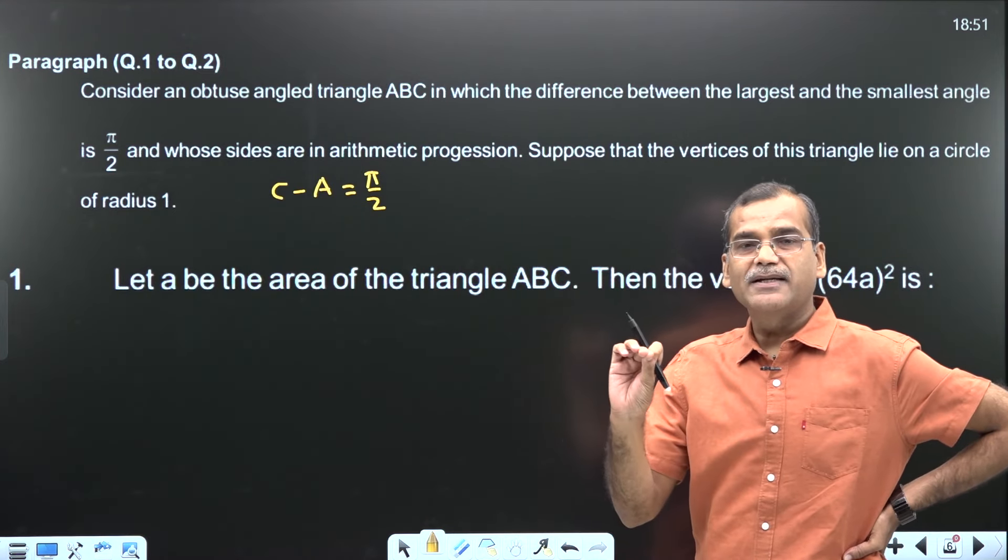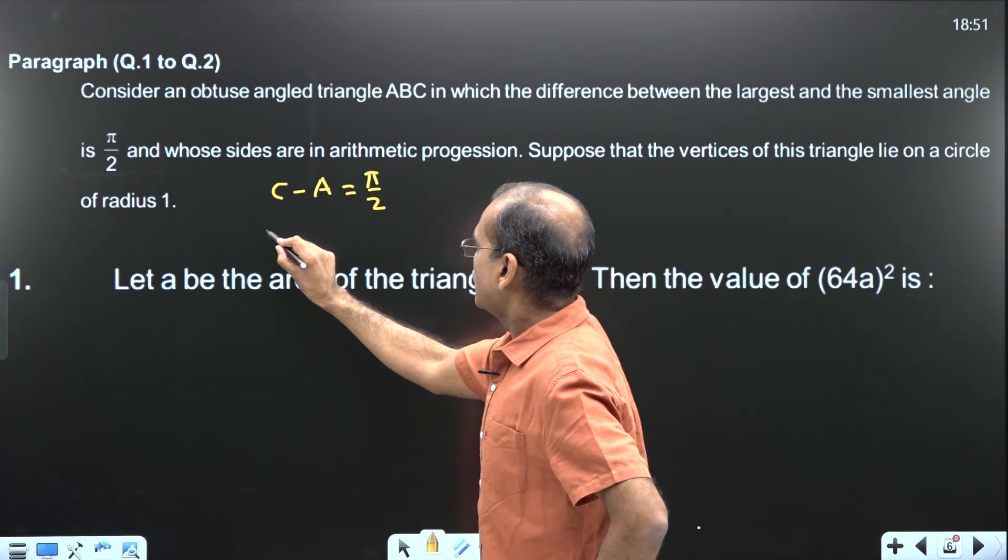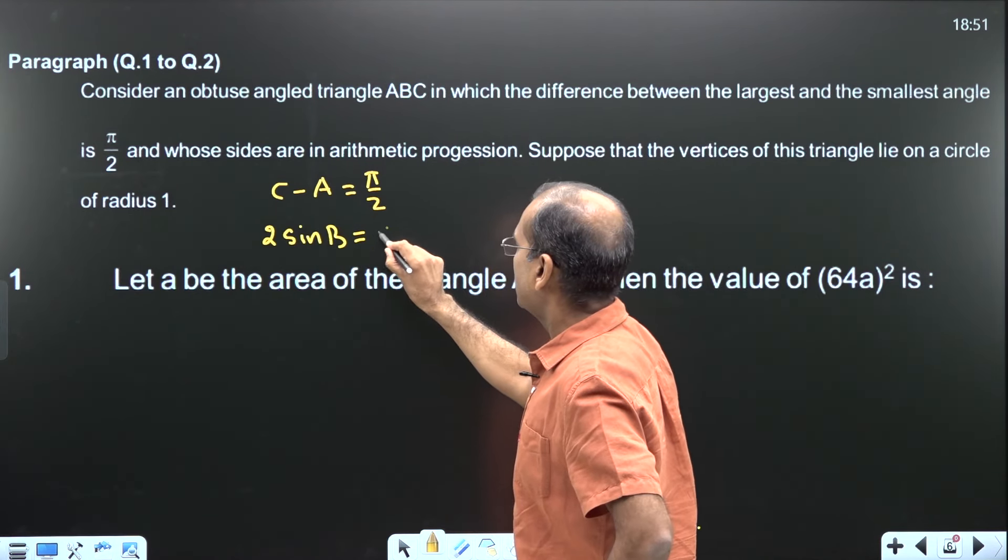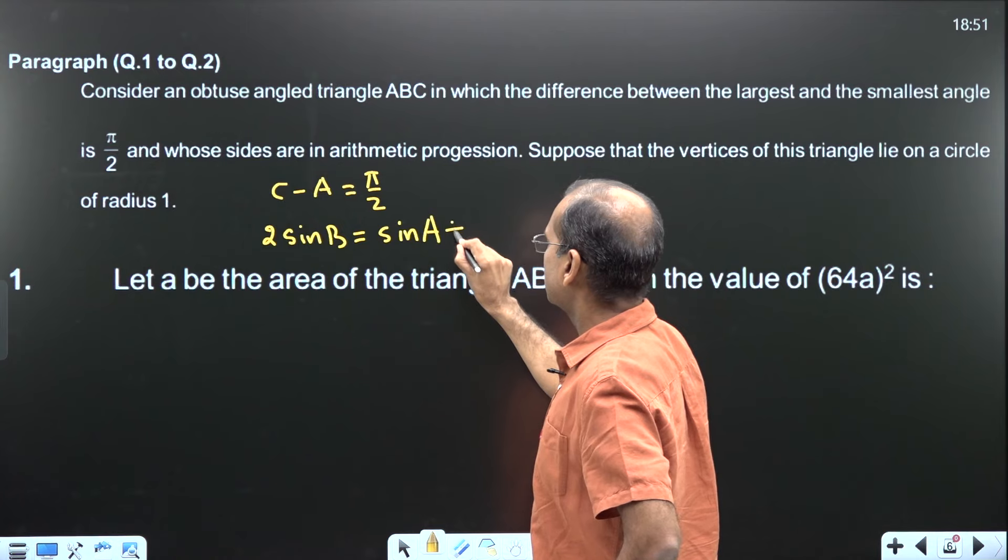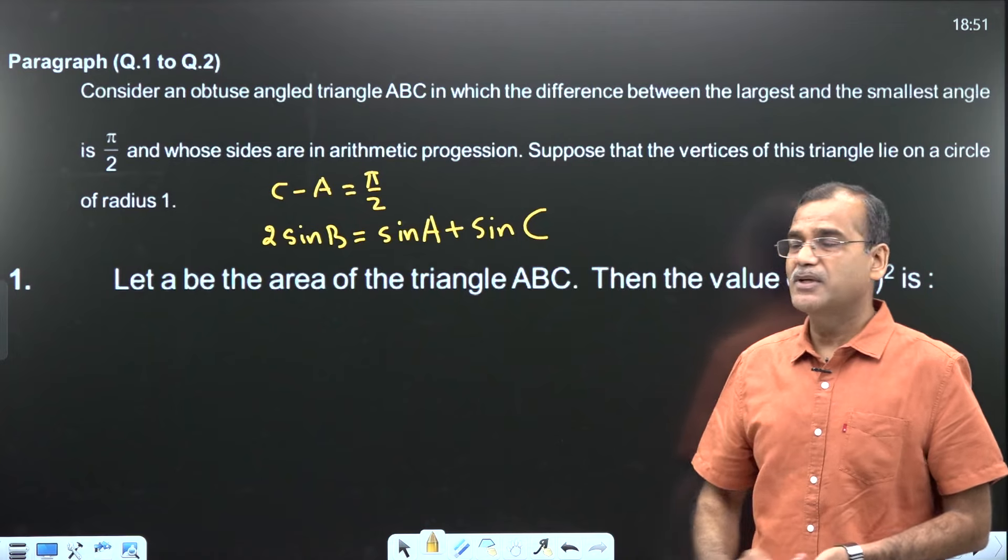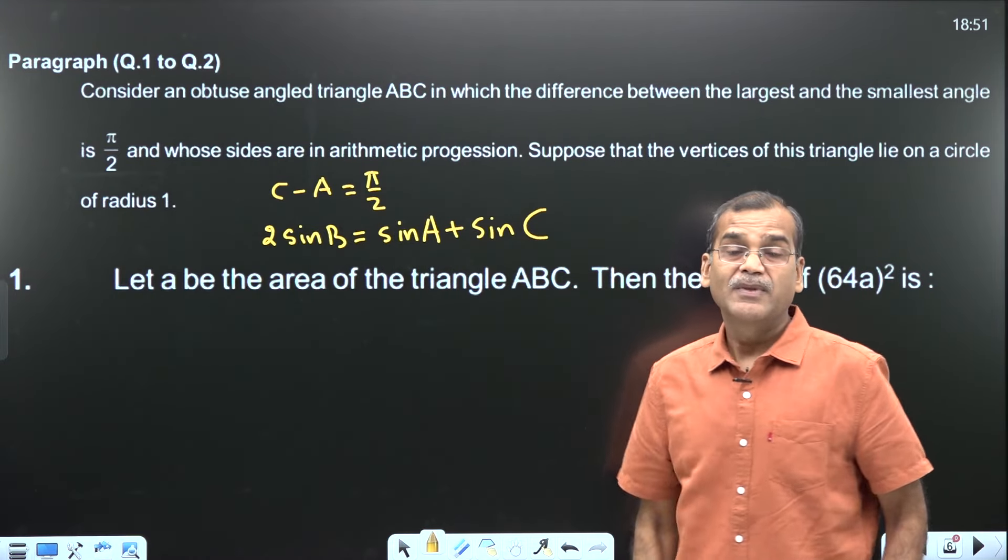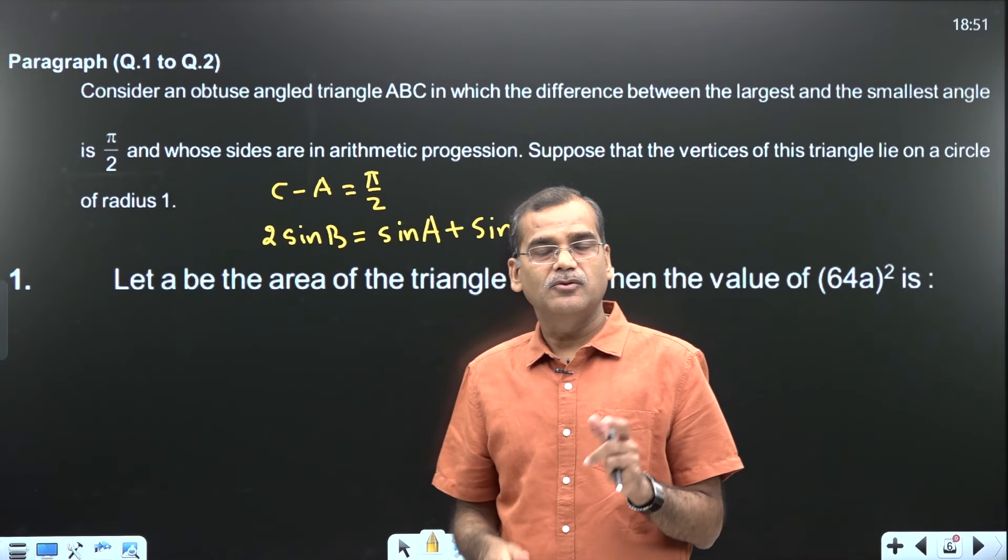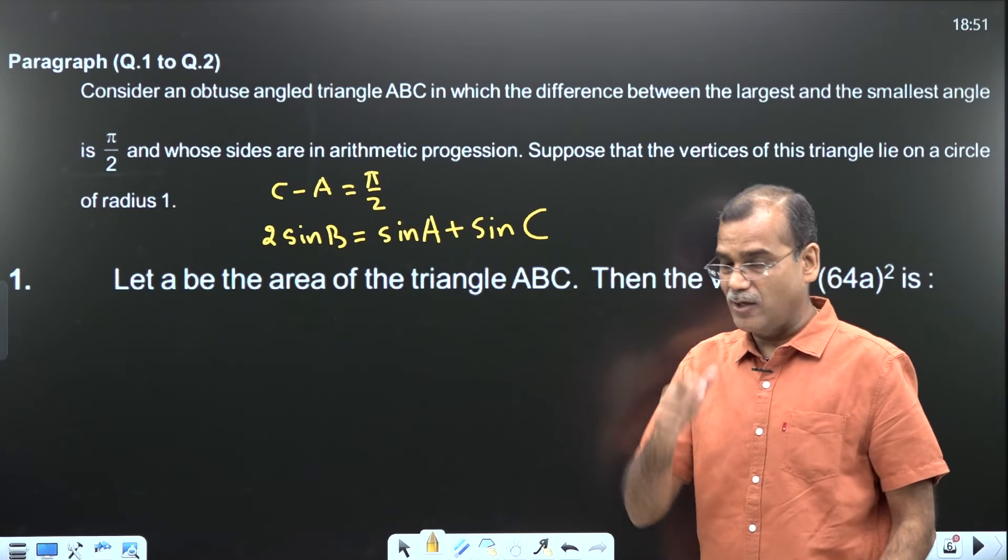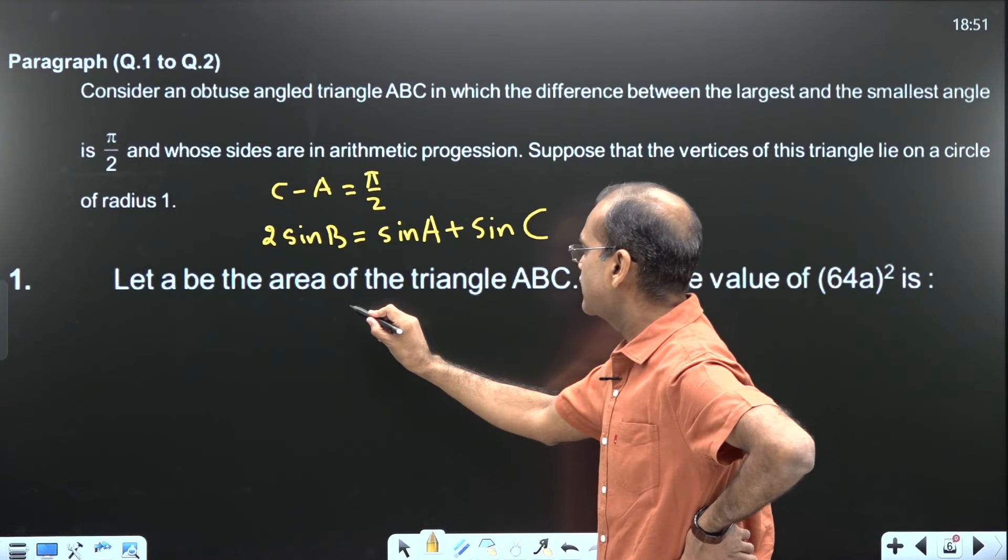Now as you see, A, B, C are in AP. So 2R sin A, 2R sin B, 2R sin C. Therefore 2 sin B equals sin A plus sin C. You understand what formula I used. Because we are given a relation in angles, let's do calculation also in angles. I replaced sides in terms of angles using sine law. Now do simple trigonometric manipulations.